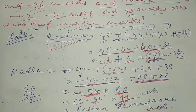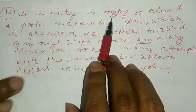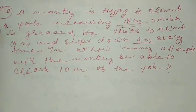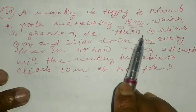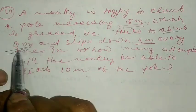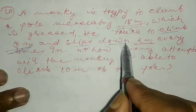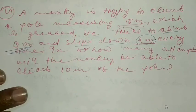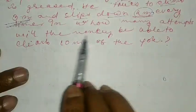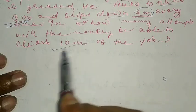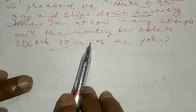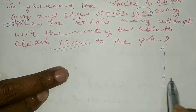Now move to question number ten. A monkey is trying to climb a pole measuring 15 meters. It tries to climb three meters up and slips down two meters. In how many attempts will the monkey be able to climb 10 meters of the pole?